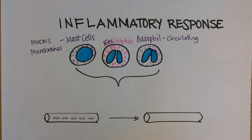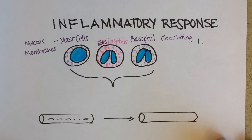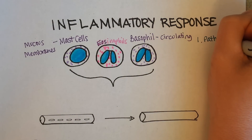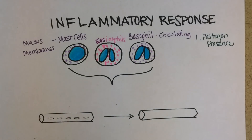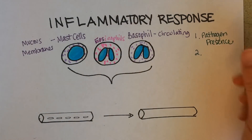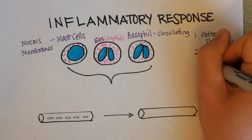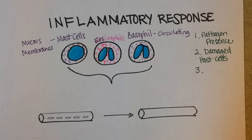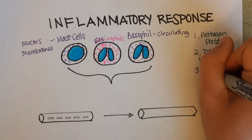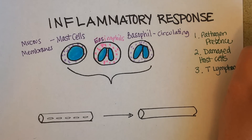So what makes them trigger inflammation? There are a few things that can activate them. One of those things is the presence of the pathogen — if the white blood cell comes into contact directly with a pathogen in your body, then it will be activated to release histamine. Or sometimes your own damaged host cells will give off SOS signals. And also, once adaptive immunity gets underway, T cells can actually feed back. Those are lymphocytes and they're part of adaptive immunity, which we haven't gotten to too much of yet.